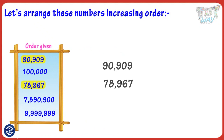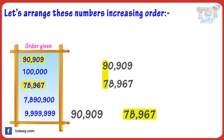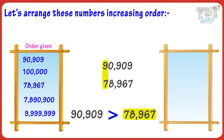Now compare them to find the smaller number between these two. Comparing the first digits, we get that 78,967 is a smaller number, so 78,967 is the smallest.